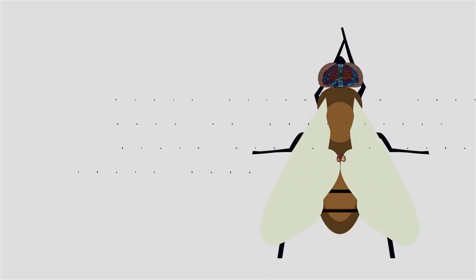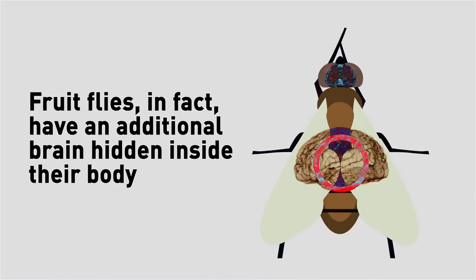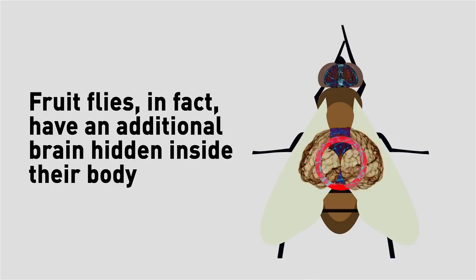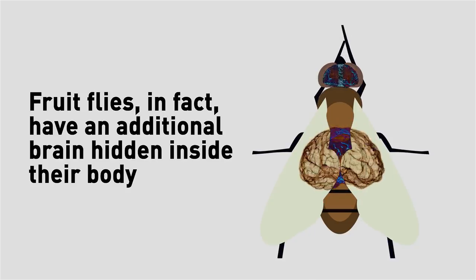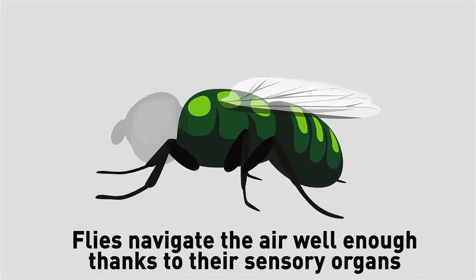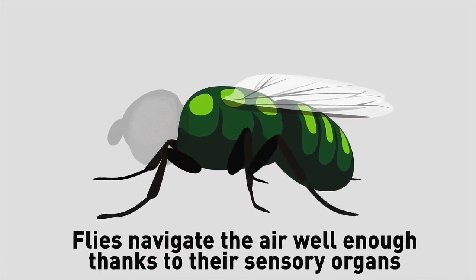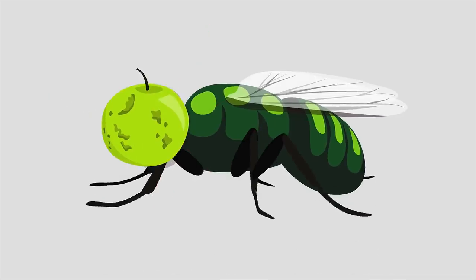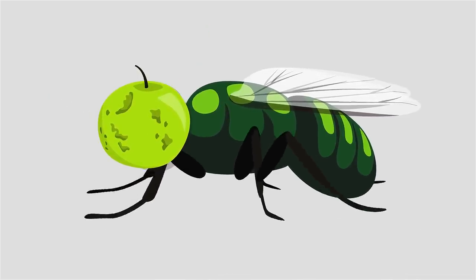Such a crazy thing happens because fruit flies, in fact, have an additional brain hidden inside their body. And even without eyes to see, flies navigate the air well enough thanks to their sensory organs. So basically, they don't even need their head apart from feeding.